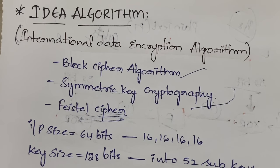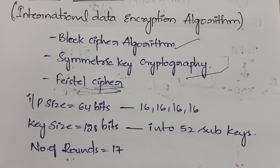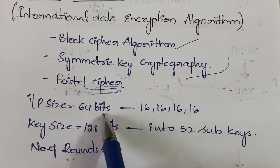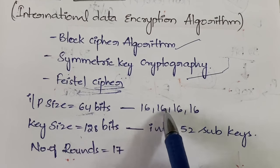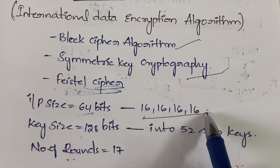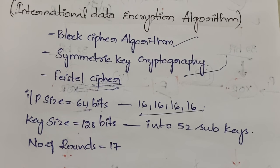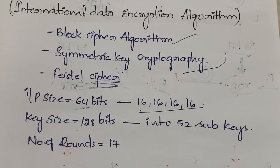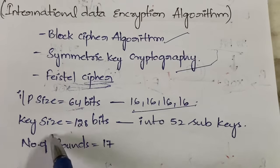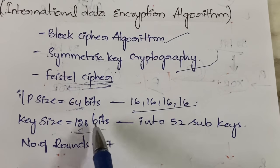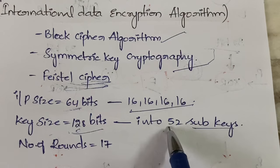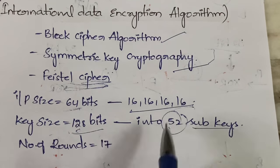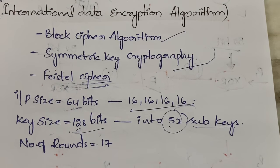The size of input is 64 bits. Since it follows the Feistel cipher, the 64 bits will be divided into four 16-bit blocks. The key size is 128 bits, and this 128-bit key will be divided into 52 sub-keys.